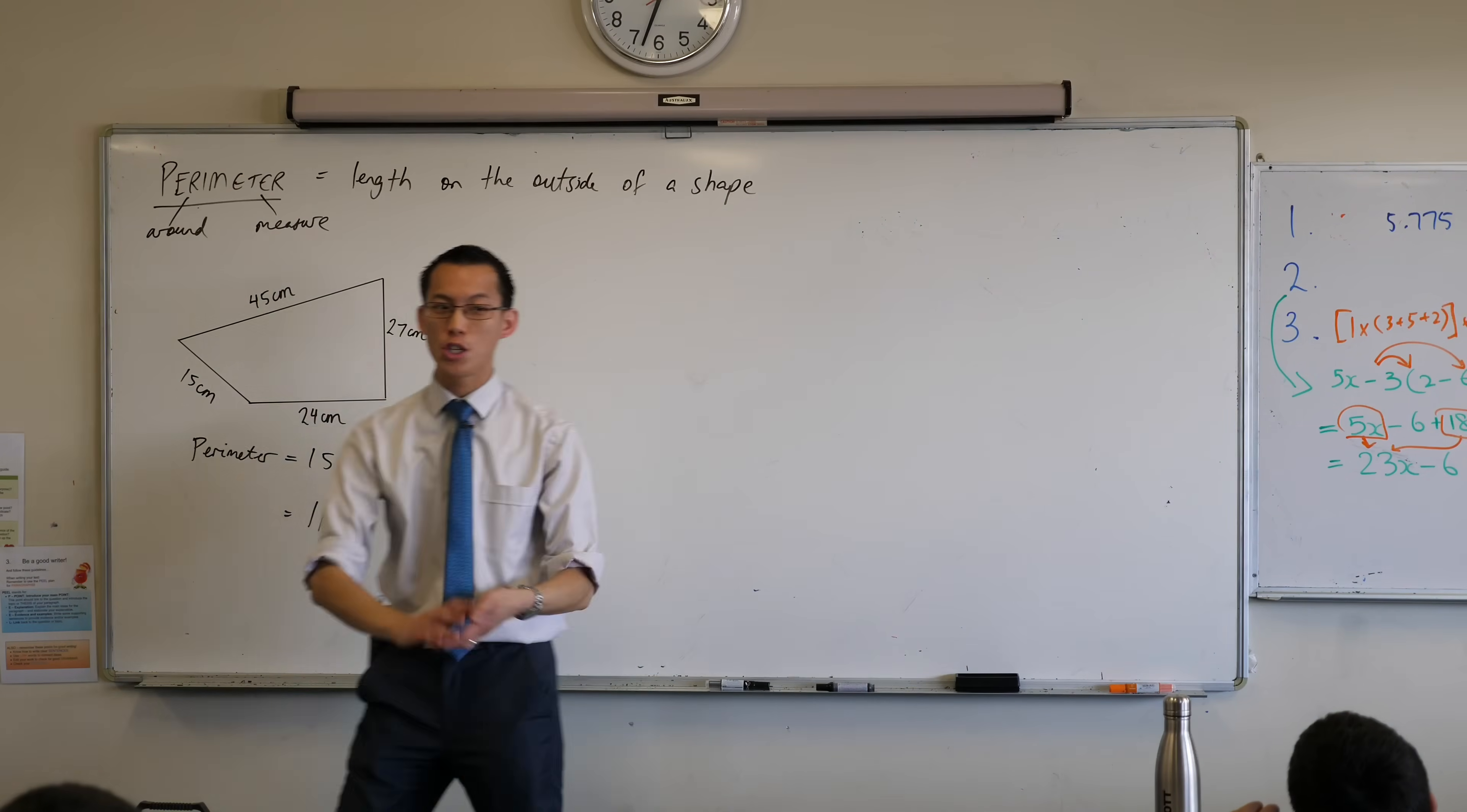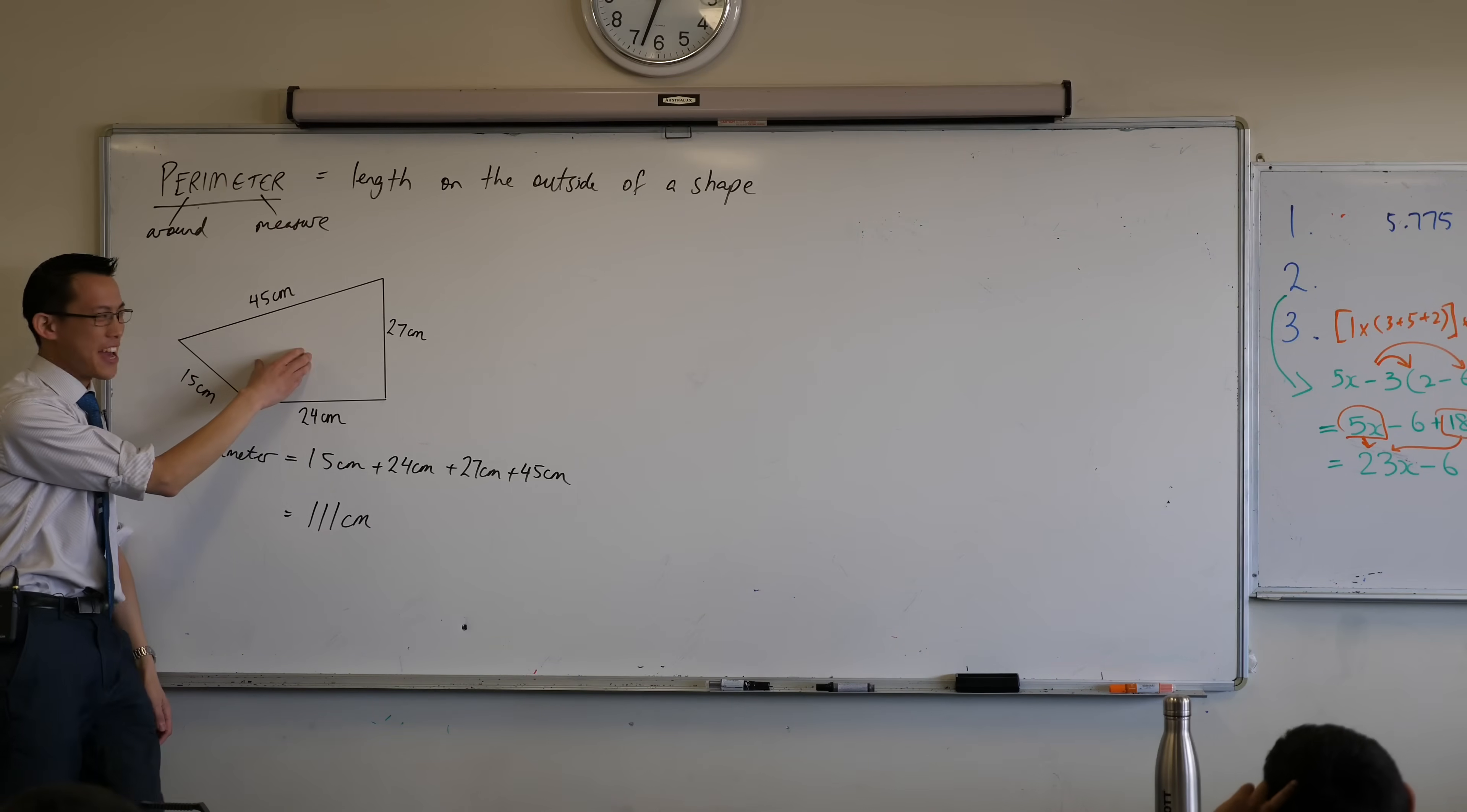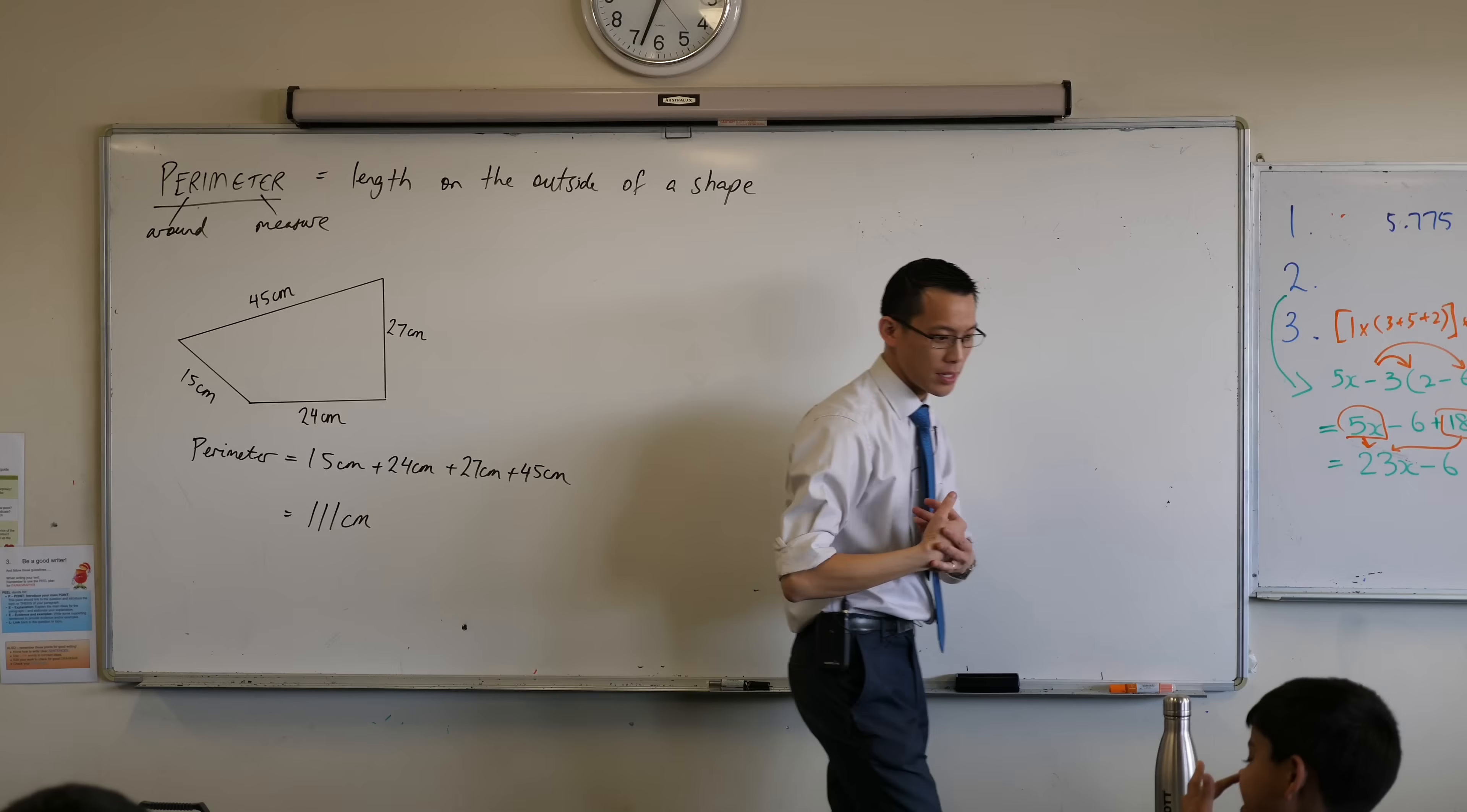So what I'd love you to have is your shape. Your shape, is it? Yay! I can still do arithmetic. Okay. You want to have your shape, all of your measurements. Then I'd love you to write perimeter equals and then show me your measurements all adding up together because that's the essence behind perimeter. Okay.